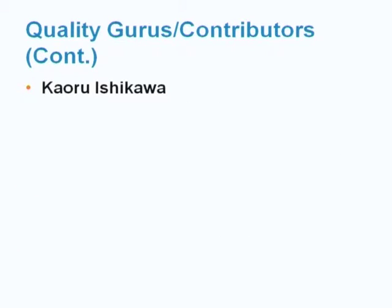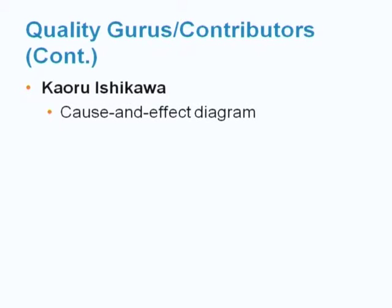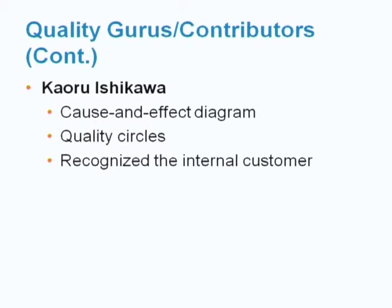Kaoru Ishikawa was a late Japanese expert on quality, strongly influenced by Professor Deming and Juran. He developed the cause-and-effect diagram, created the concept of the quality circle, and recognized the internal customer.